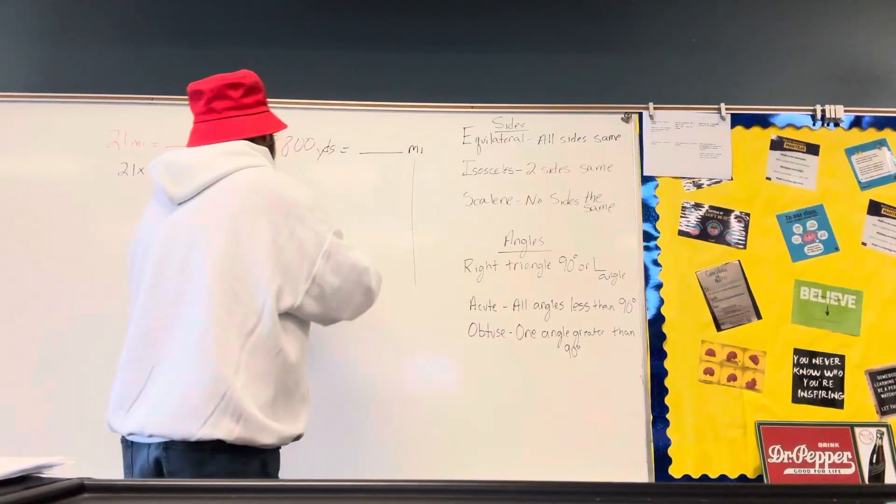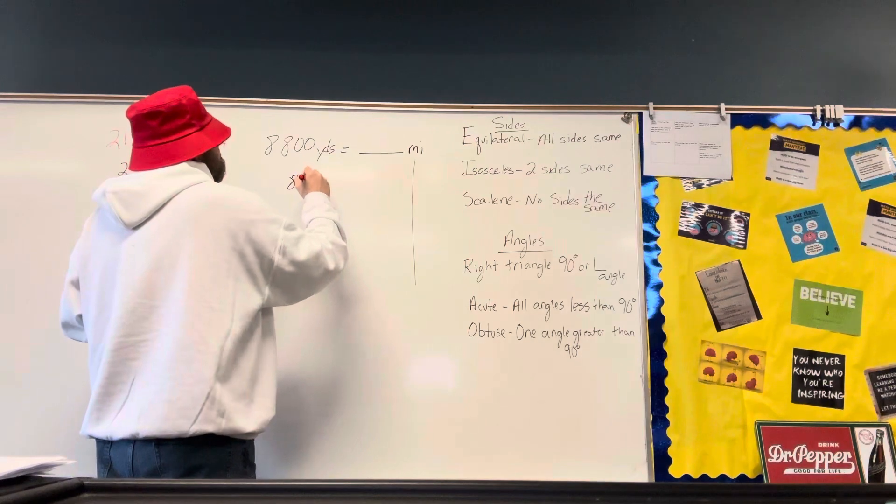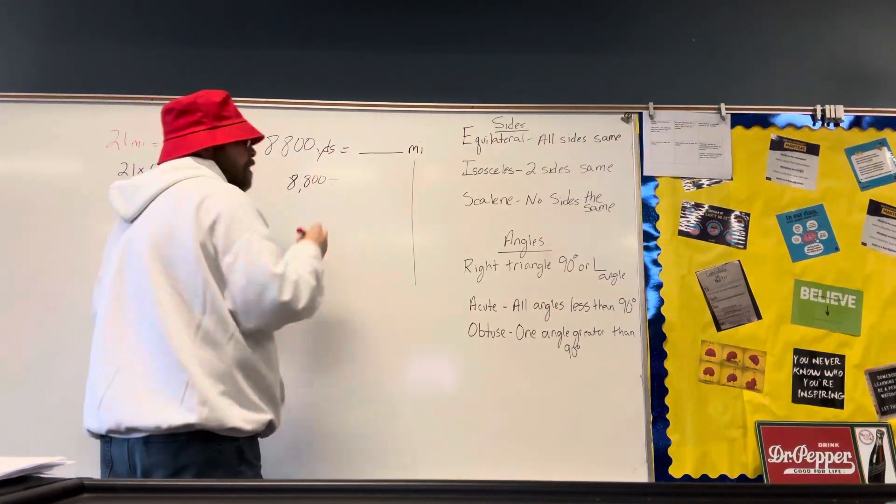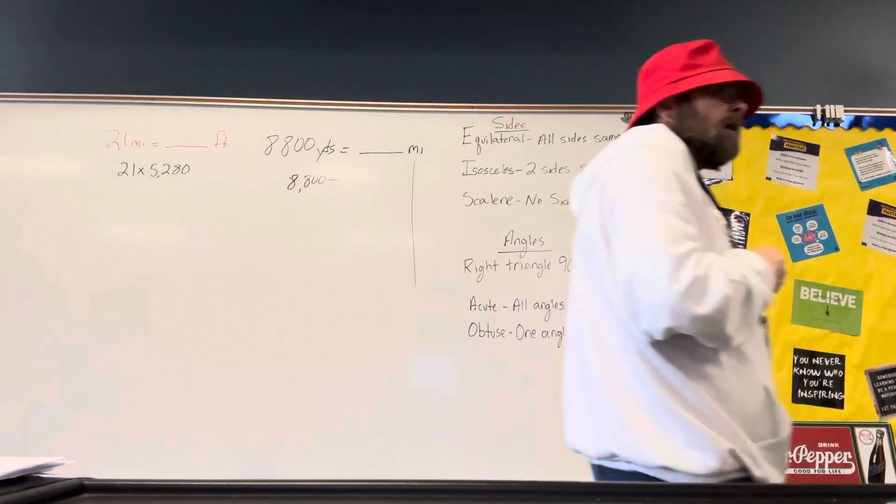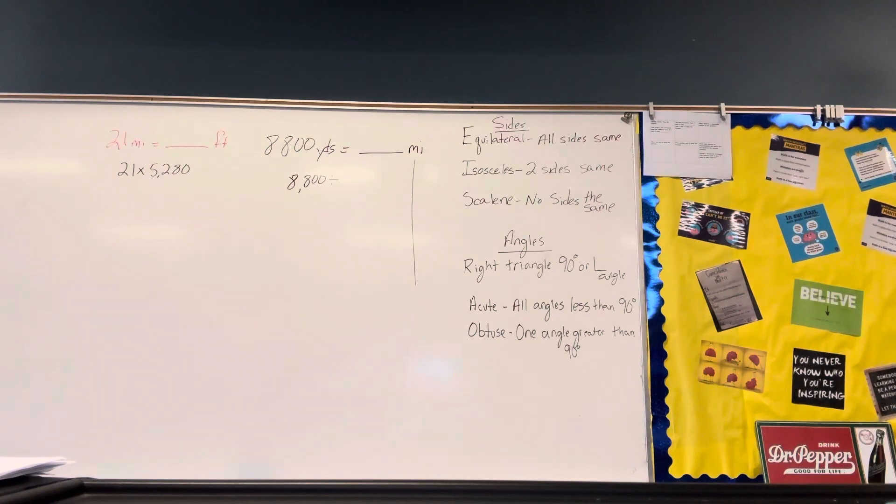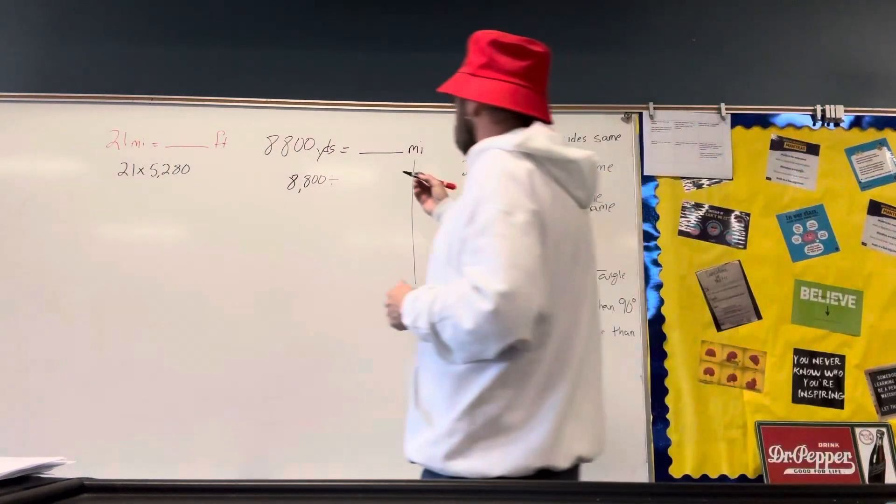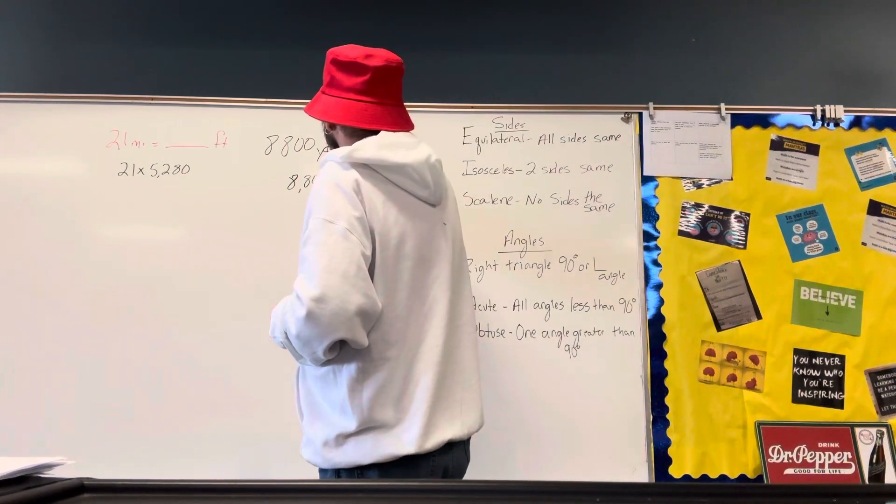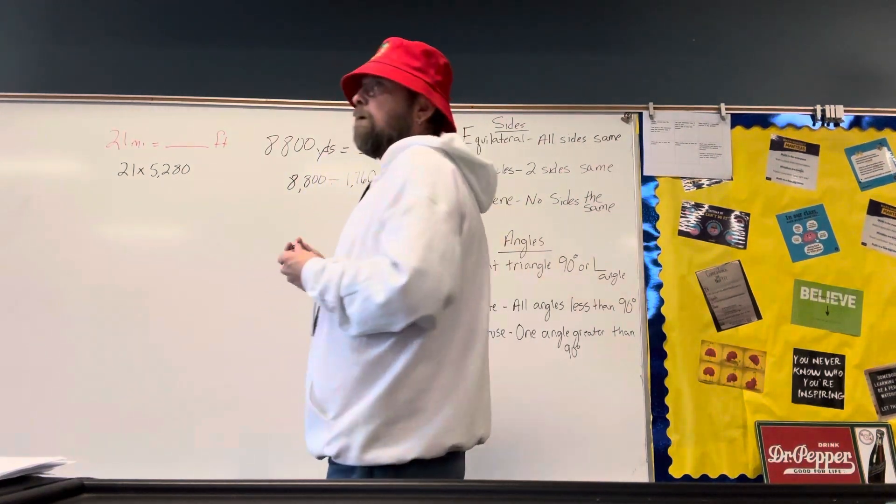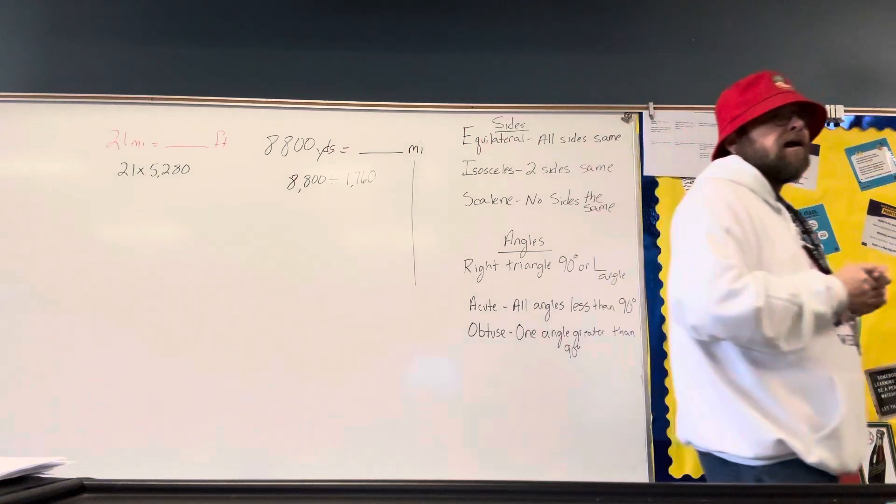Since we're dividing, we start with 8,800. And we divide by how many yards are in one mile? 1,760. 1,760. Now, obviously, I'm not going to require you to do that actual division.